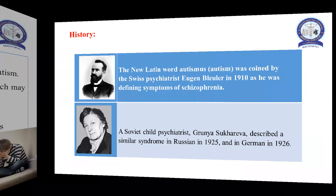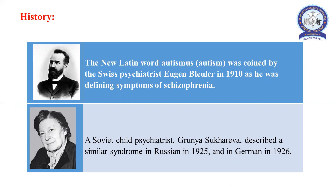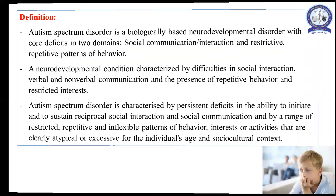Regarding historical aspects: the New Latin word 'autismus' was coined by Swiss psychiatrist E.G. Bleuler in 1910 as he was defining symptoms of schizophrenia. A second pioneer in autism is the Soviet child psychiatrist Grunya Sukhareva, who described a similar syndrome in Russian in 1925 and in German in 1926.